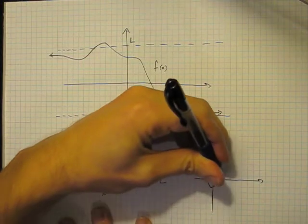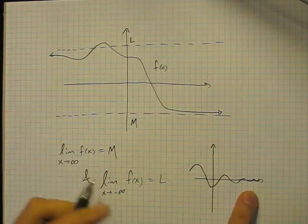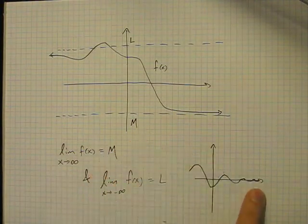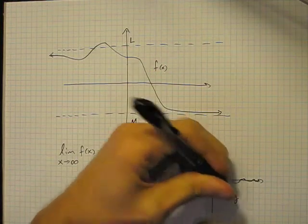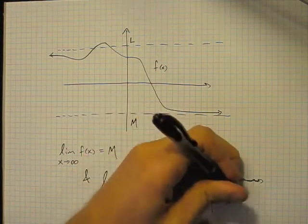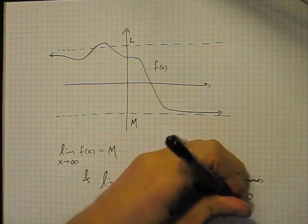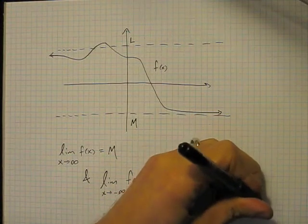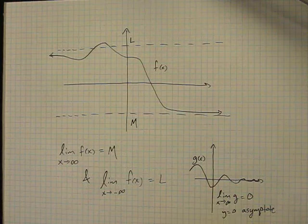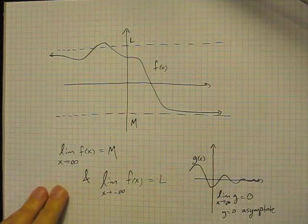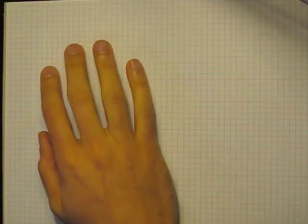Notice that a graph can cross its asymptotes. So in particular, if we drew a graph of something like this — call this thing g of x — the limit as x goes to infinity of g of x is equal to zero, and y equals zero is an asymptote. But you see the way I drew this graph g, it crosses the asymptote many times in this case. So horizontal asymptotes can be crossed in a way that vertical asymptotes cannot be.